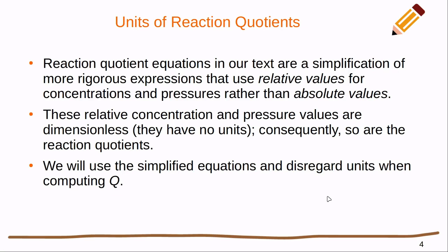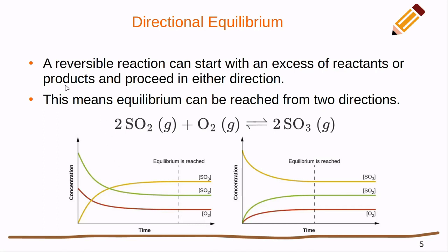A disclaimer: this chapter doesn't cover the fully rigorous derivation of reaction quotients. Rigorously, we would use relative values — dividing each concentration or pressure by a reference amount — making them dimensionless with no units. We're not doing that here. Instead, we'll simply disregard the units of Q and K and assume they have whatever units make everything work out correctly. Don't get too caught up on units.